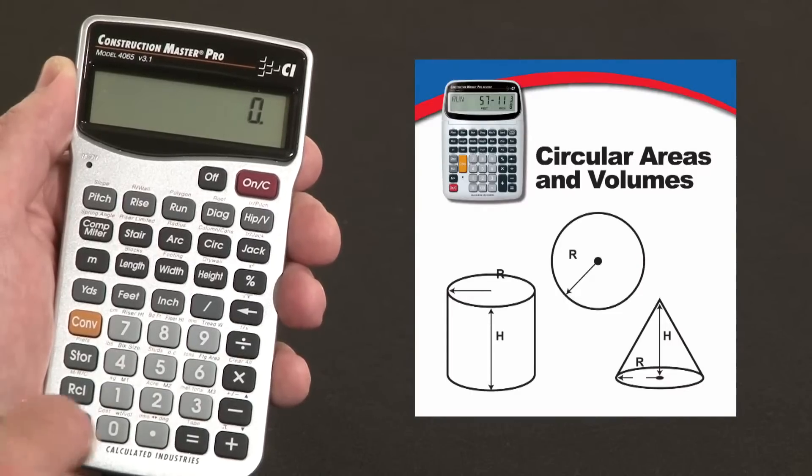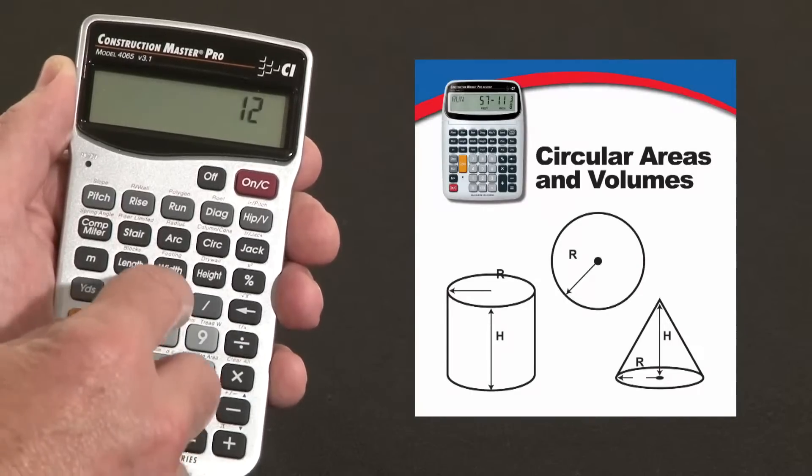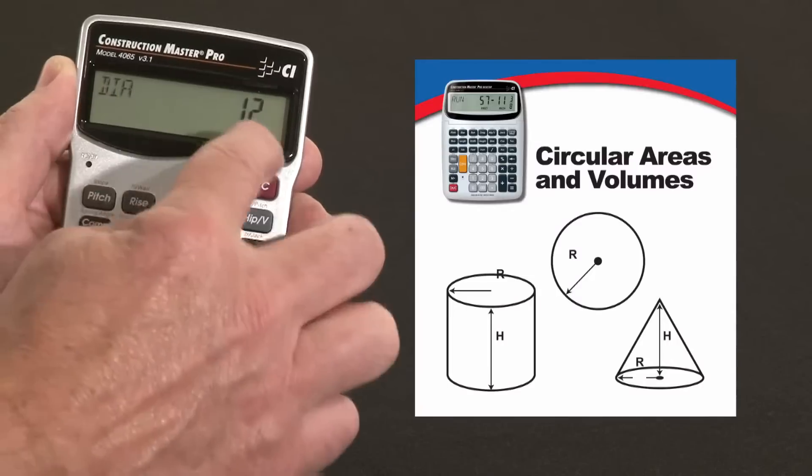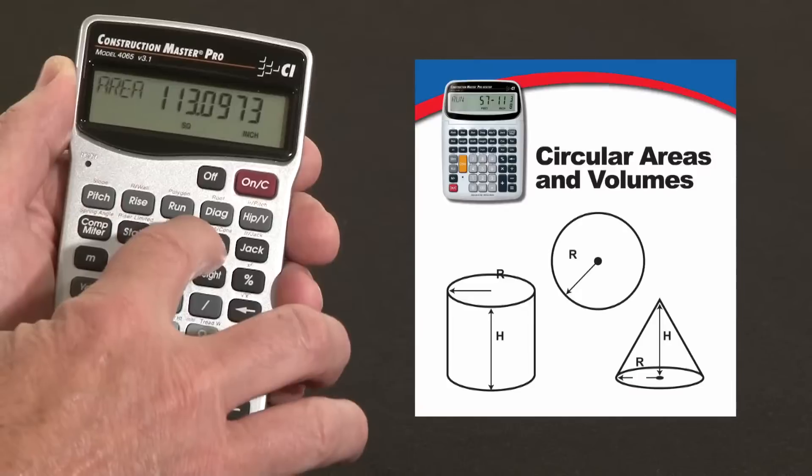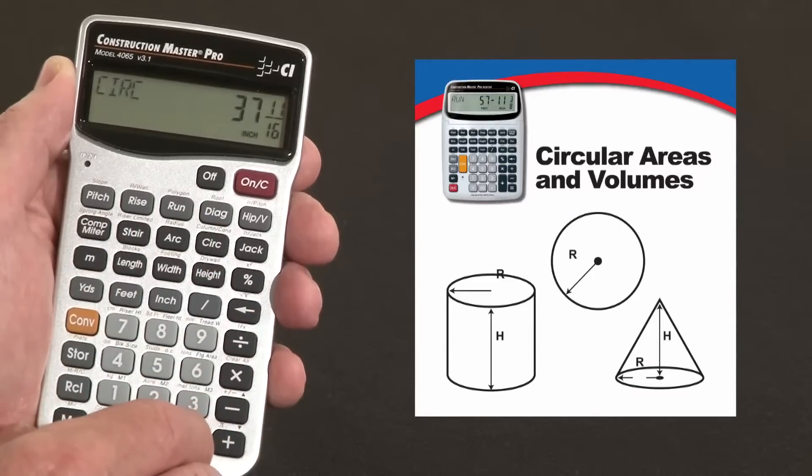You start off by entering the diameter, let's say 12 inches, and I hit circle. That's the diameter. Press it again, it gives me the surface area at the top of that circle. Press it again, it gives me the circumference around that circle.